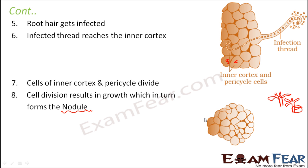To summarize: first, the root secretes some chemicals; if those chemicals encourage bacterial growth, bacteria start to grow near the root hairs; the root hairs curl and bacteria enter inside, so the root hair gets infected; the infected thread reaches the inner cortex; and as a result, cells of the inner cortex and pericycle start to divide, forming an outgrowth known as the nodule.